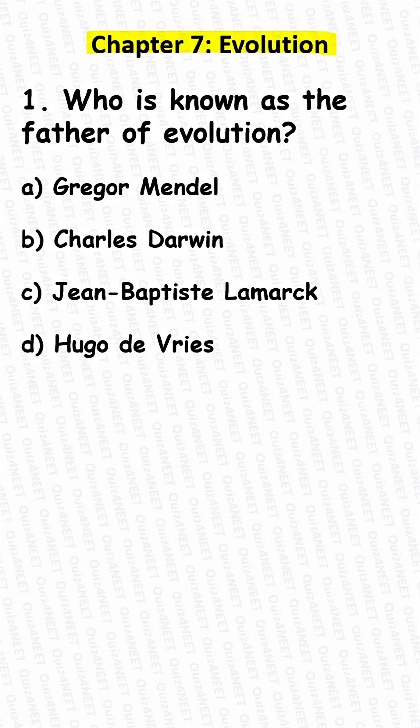Question 1. Who is known as the father of evolution? A. Gregor Mendel. B. Charles Darwin. C. Jean-Baptiste Lamarck. D. Hugo de Vries.